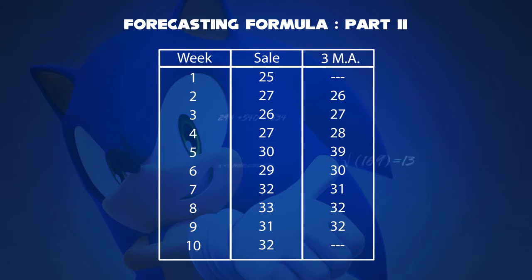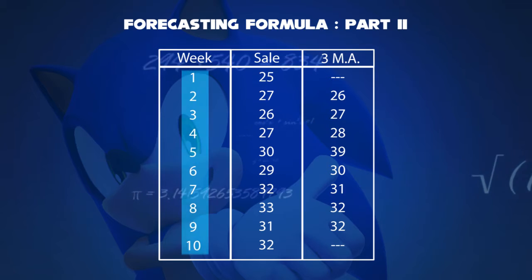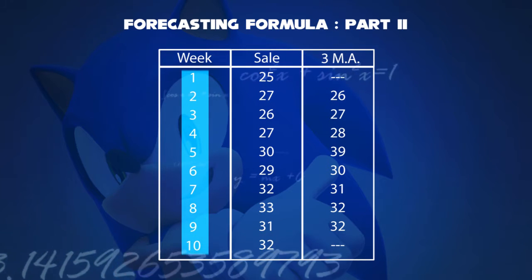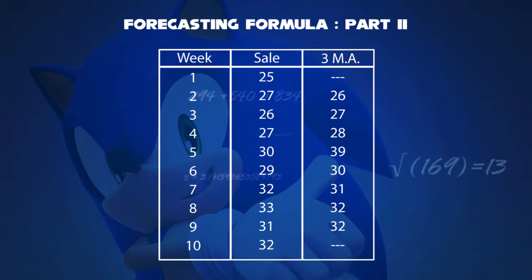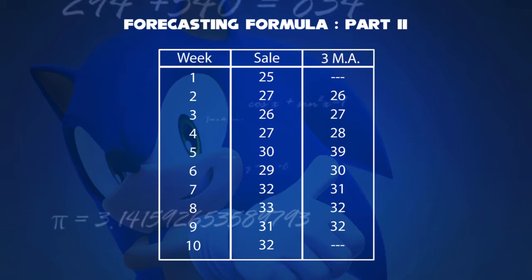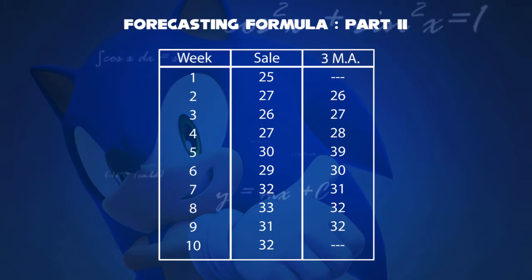We start from the second week first. If you have a range of 10 weeks, you can find out the moving average from second to ninth week. So the first three columns include week, sales, and three moving averages.